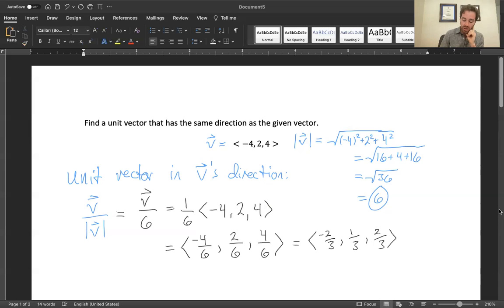And let me see. Let's say maybe I don't really believe that this has a magnitude of 1, which is the definition of a unit vector. So let's say that I decide I'm going to take the magnitude of it. And that's going to be square root of negative 2 thirds squared plus 1 third squared plus 2 thirds squared. 2 thirds squared is 4 thirds and then 1 third and then another 4 thirds. So 4 thirds plus 1 third plus another 4 thirds.